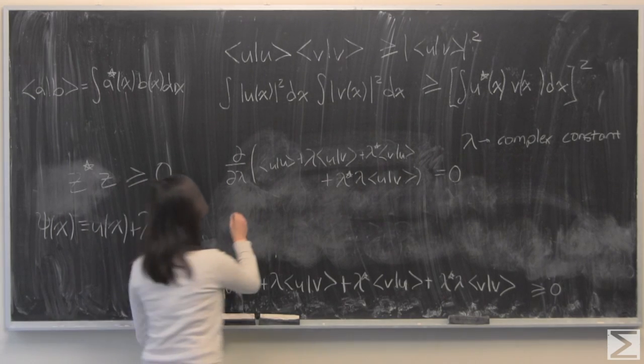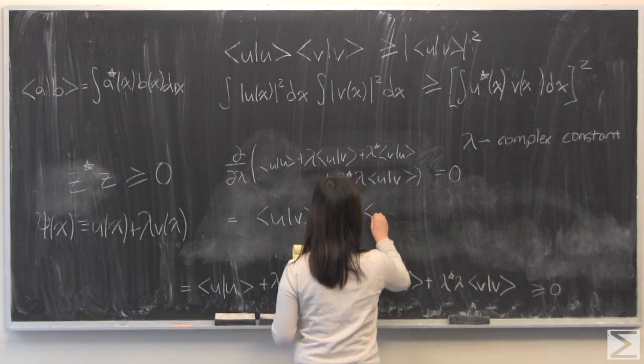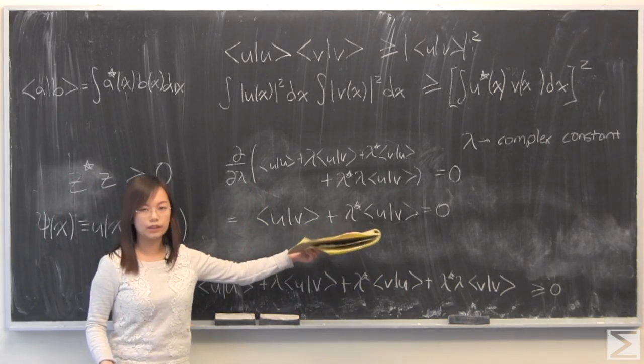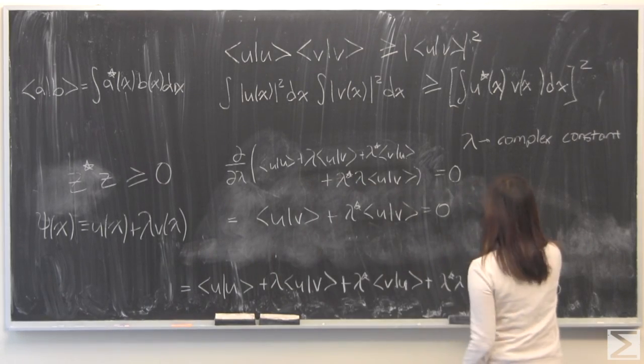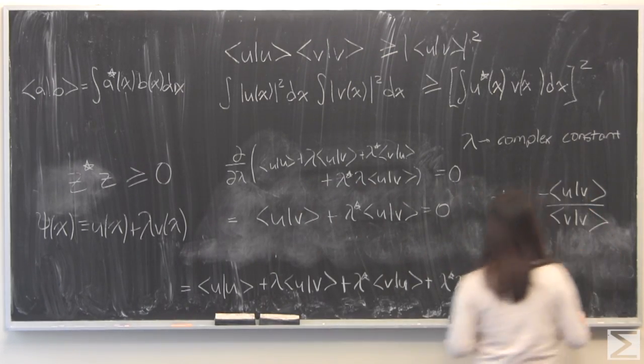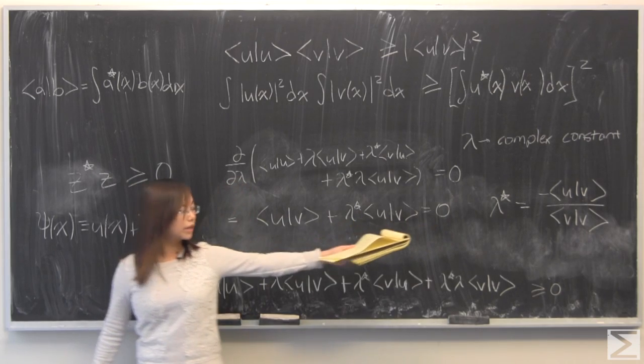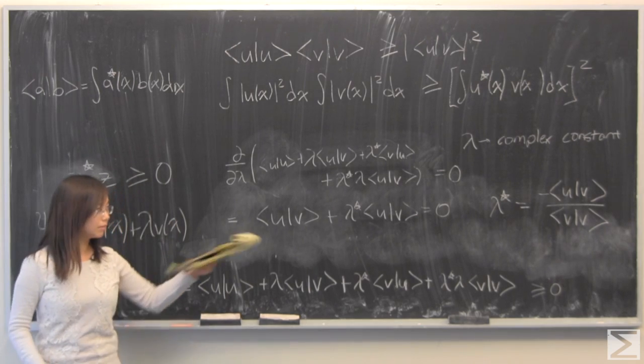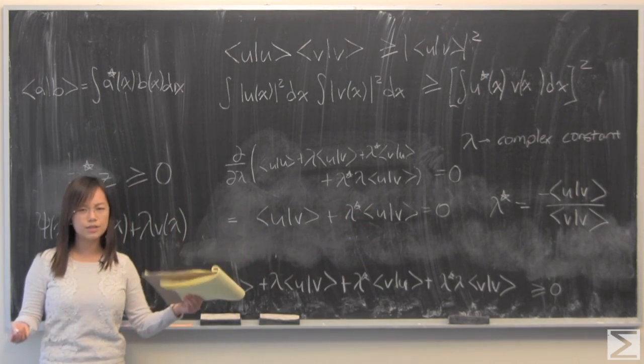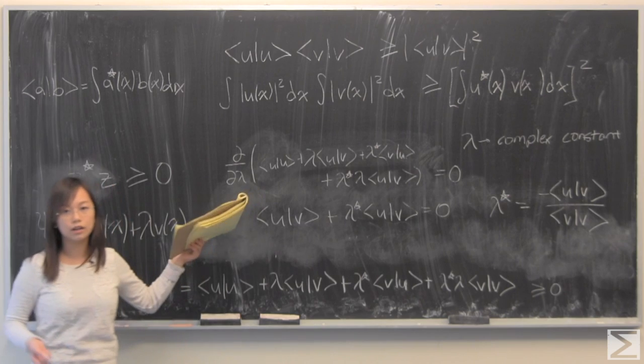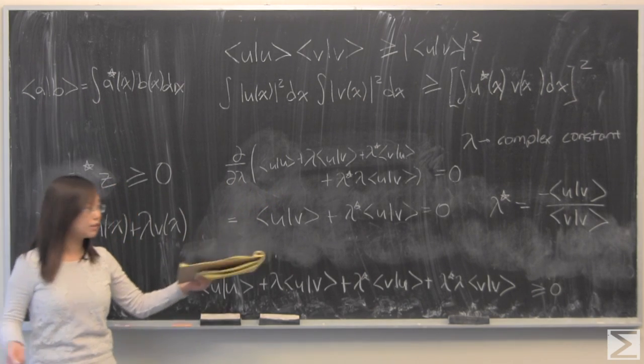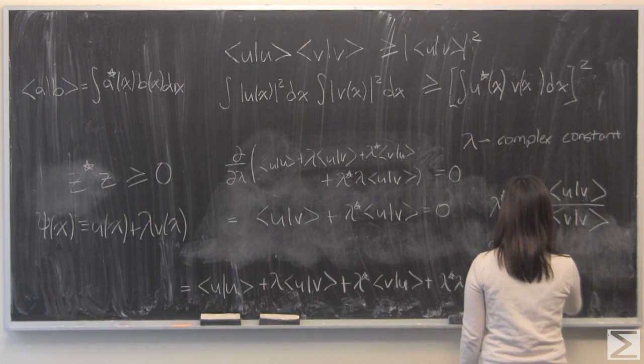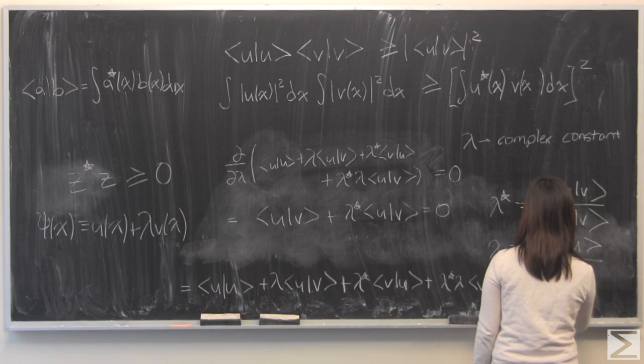We then get the very simple result. And here, it is very easy to see that you can solve for lambda star. And when you do, lambda star is a complex conjugate of lambda, there are two ways you could get lambda. You could do this again, but take the partial derivative with respect to lambda star. You could also just note that the complex conjugate of this will be given by lambda is equal to negative V bra u ket divided by V bra V ket.